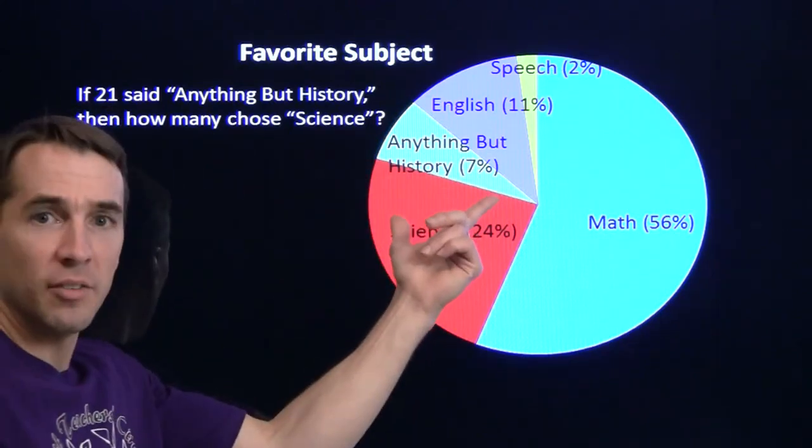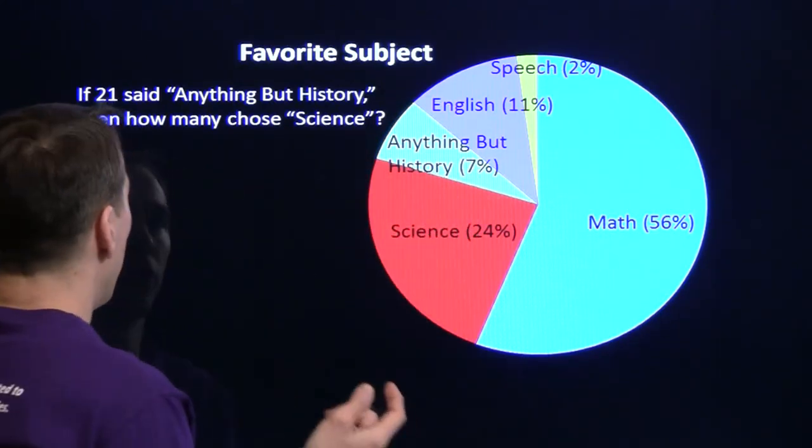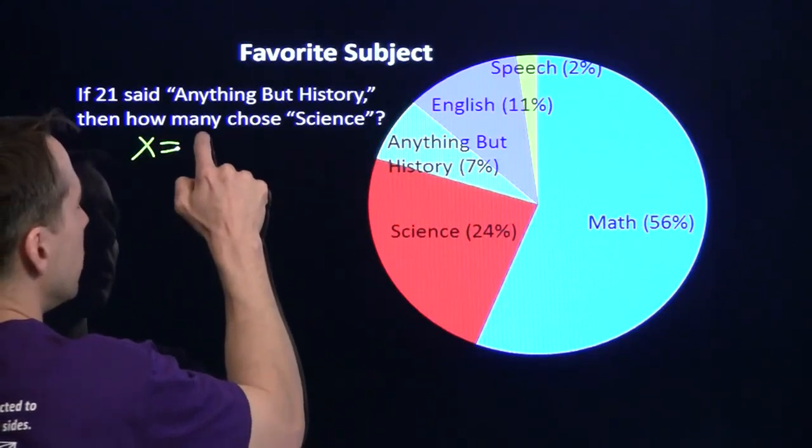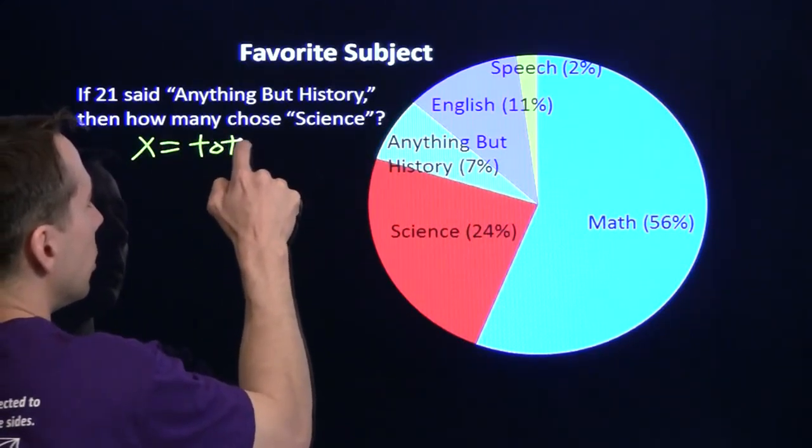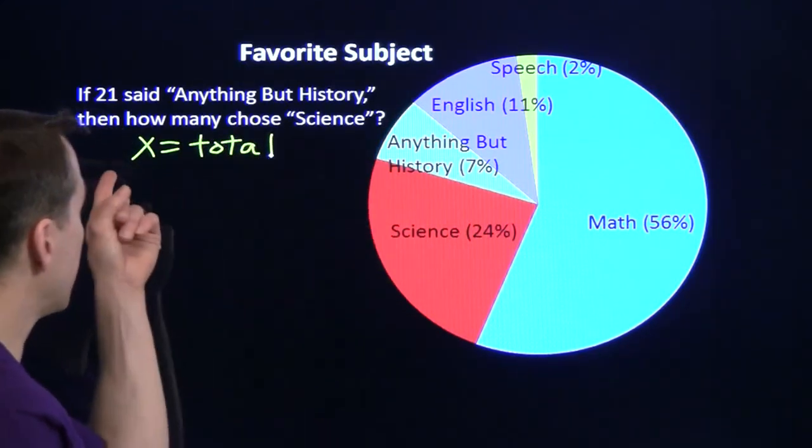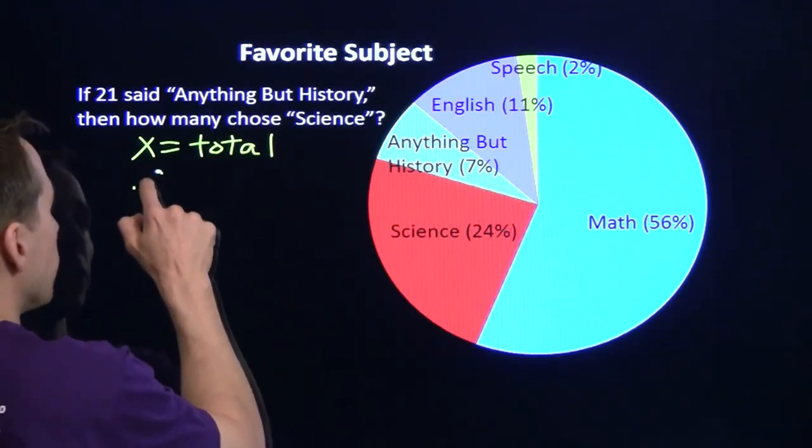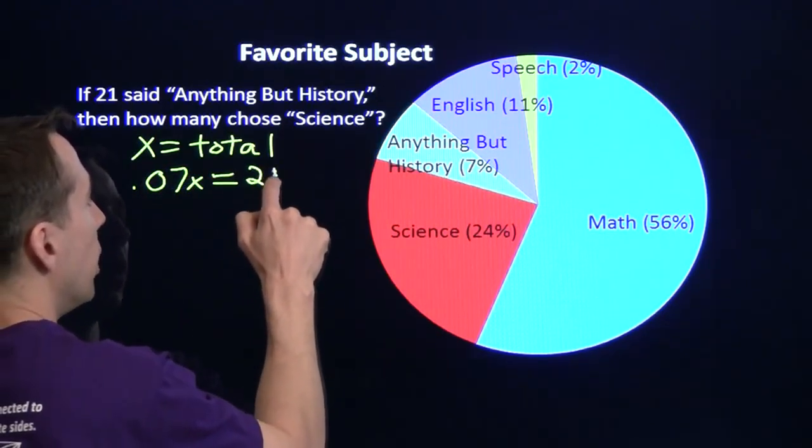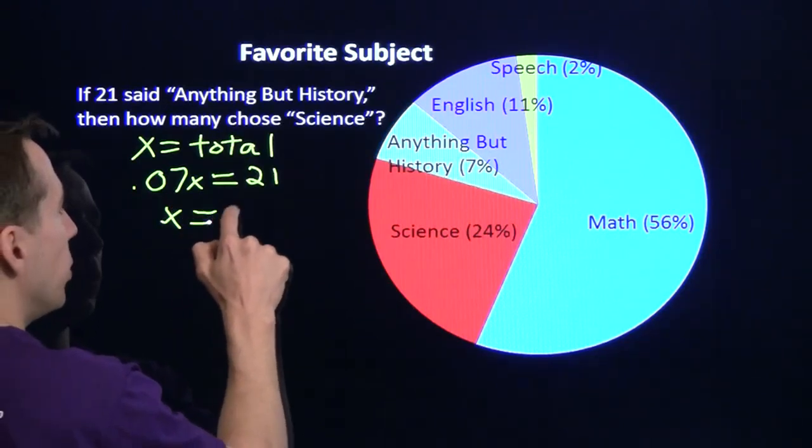Now we can tackle this problem in a bunch of different ways. First, 21 is 7% of everybody. So we could just say x is the total. And 7% of x has to be 21. So we get an equation, .07x equals 21.